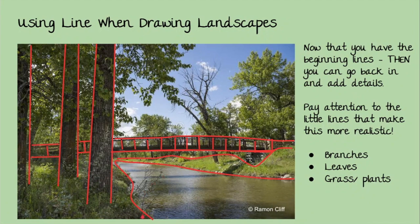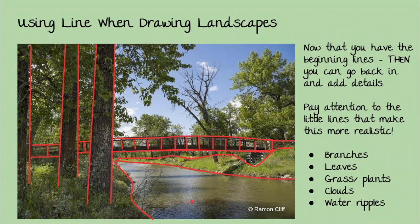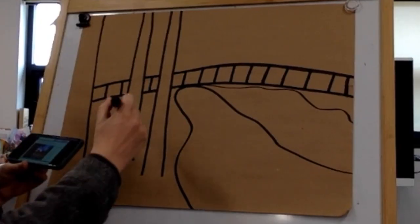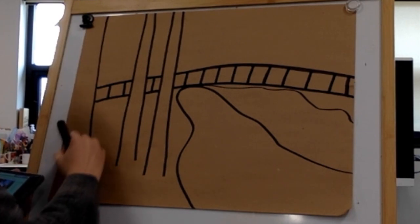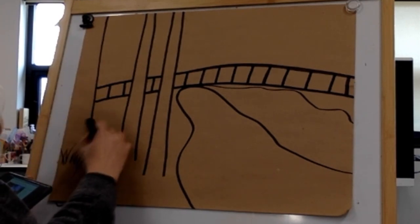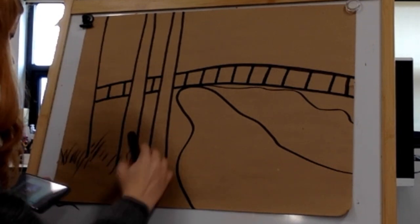There are plants creeping over top of the river. There are clouds with details way off in the distance behind the trees — we want to make sure we get those as well. Then I look at the water ripples along here, which give the water a realistic effect. In this next video you can see how I take those beginning lines and add in smaller details to make it look more realistic and complete. Here we go with my larger version done in marker, showing how we take those big lines and start to add the little details.